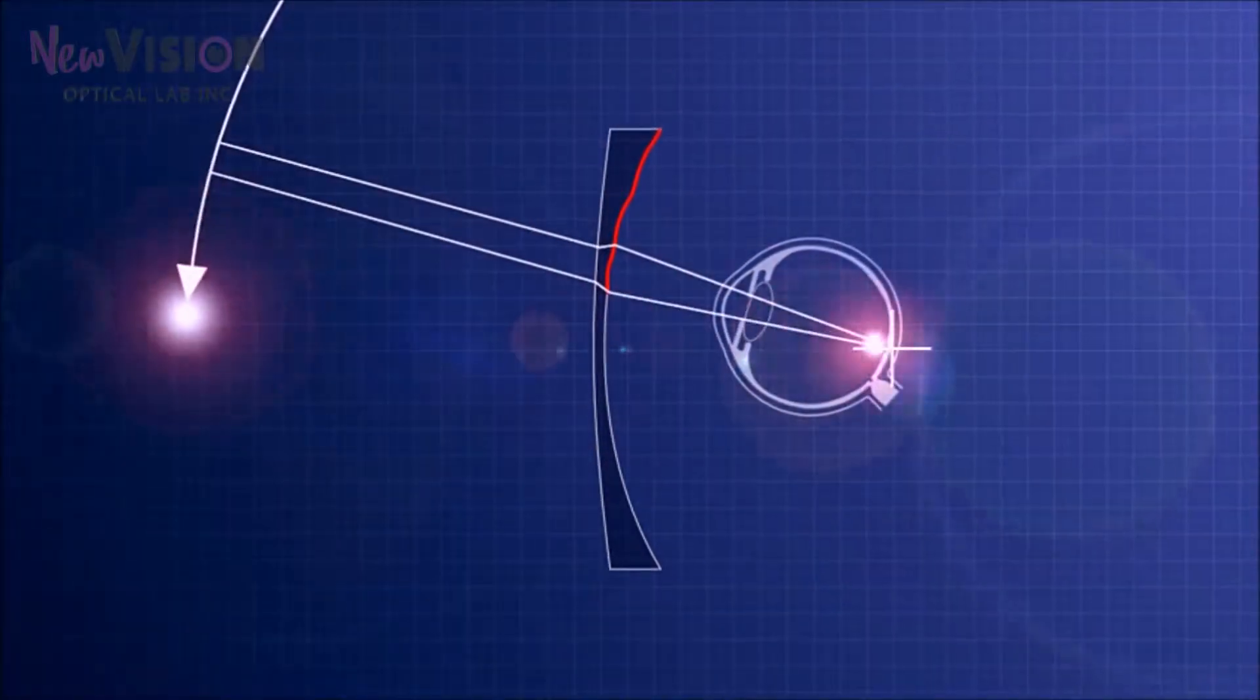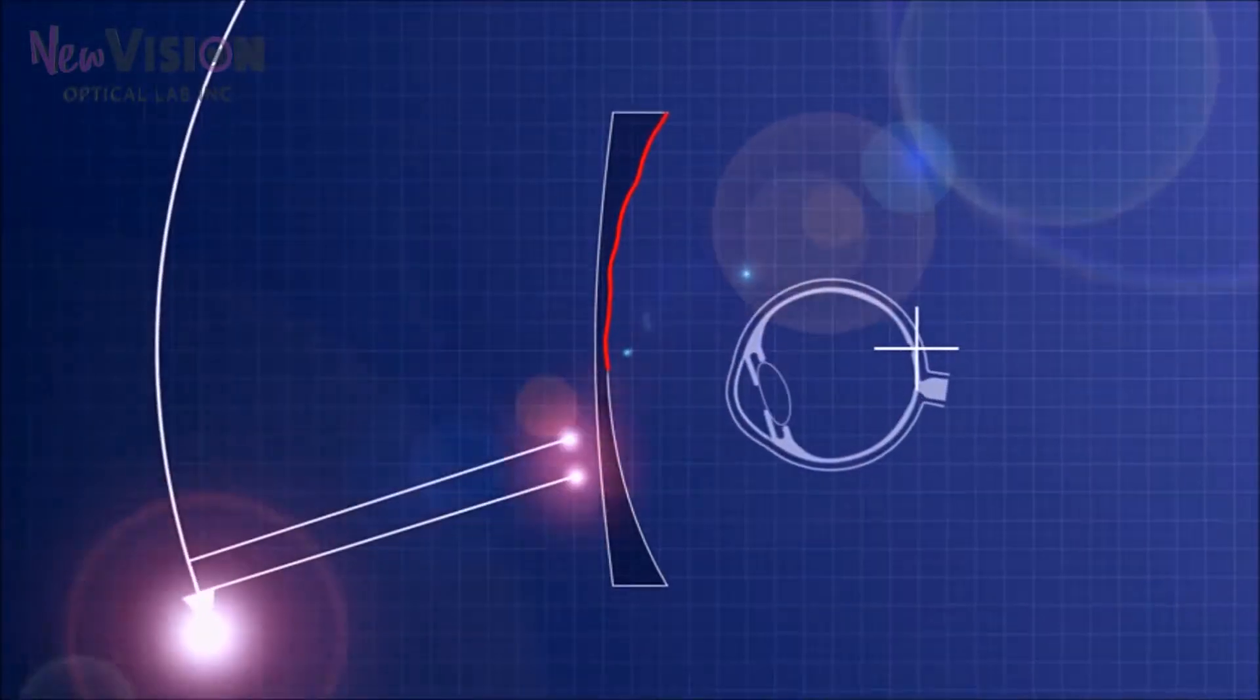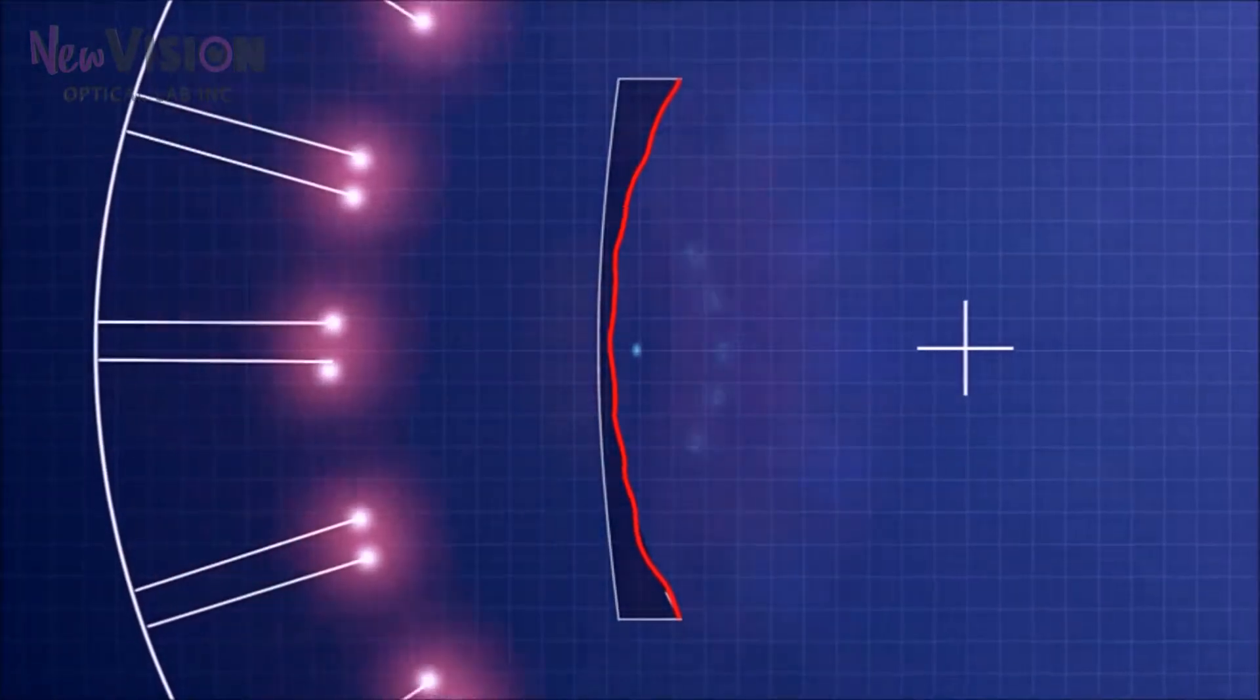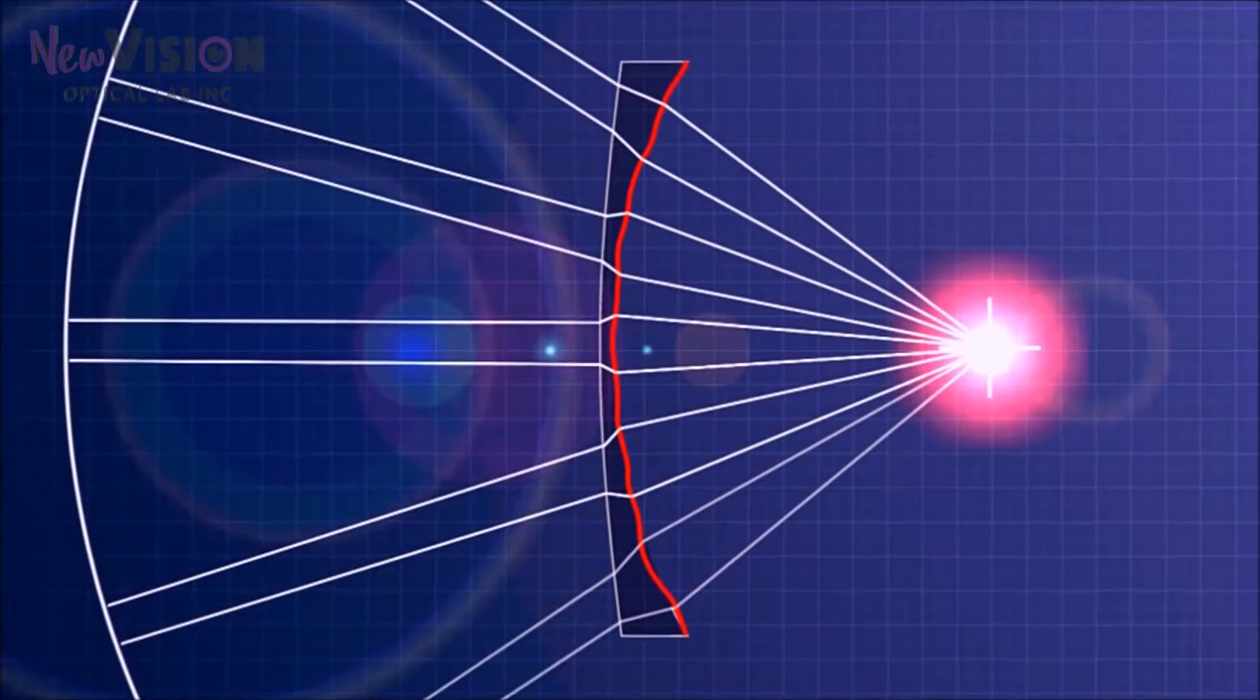This procedure is repeated for every direction of sight until the entire back surface of the lens is adjusted, and all simulated beams focus in the fovea.